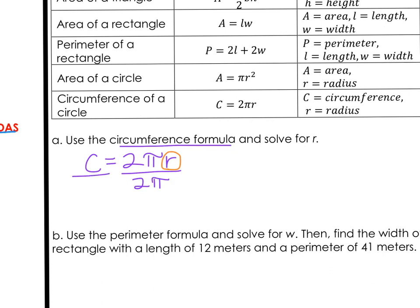If we do that on the right side, we also have to do that on the left side. On the right, the 2's cancel out, and the pi value cancels out. With our variable isolated, we would rewrite this formula as R equals capital C for circumference divided by 2 pi.